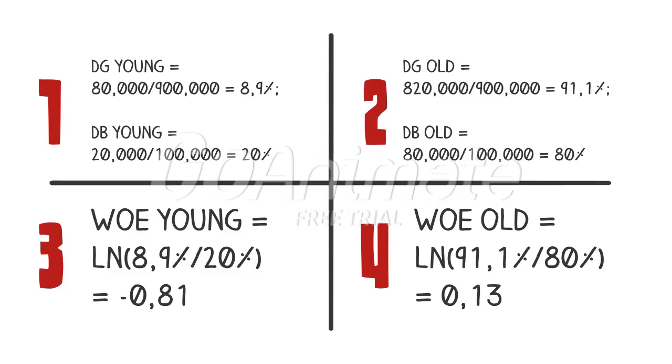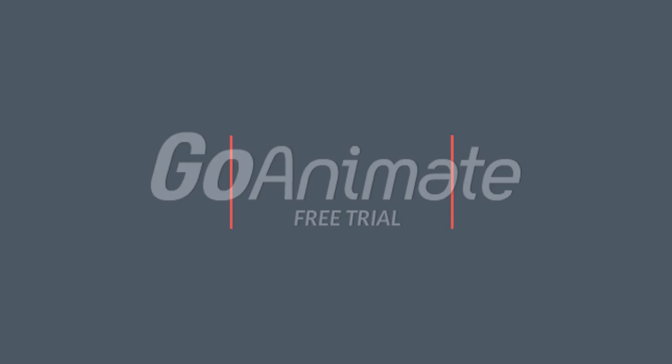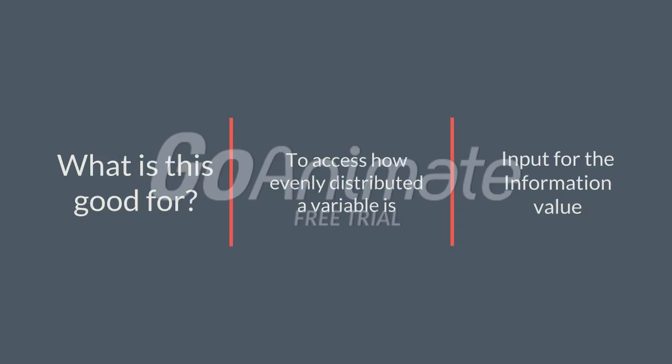And now we can calculate the same for old people, which gives us a value of 0.13. So, what is the weight of evidence good for? First of all, we can assess how evenly distributed a variable is. And also, very importantly, it is an input for the information value.